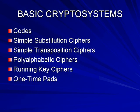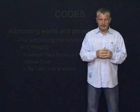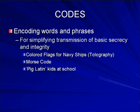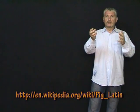Basic cryptosystems include codes, simple substitution ciphers, simple transposition ciphers, polyalphabetic ciphers, running key ciphers, and finally one-time pads. The one-time pad is the only uncrackable encryption system. Codes include things like colored flags for neighboring ships signaling each other at a distance, Morse code, and Pig Latin — which can be used at school where you take a consonant, put it at the front, move it to the back, and add a Y, allowing people to communicate without those around them understanding.